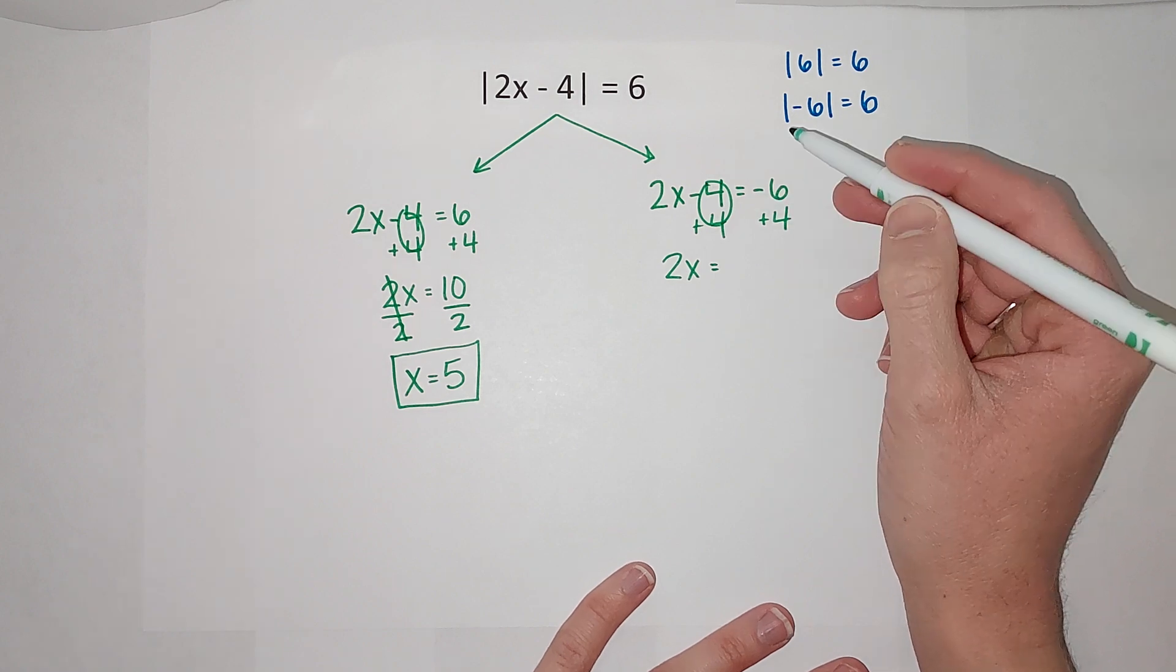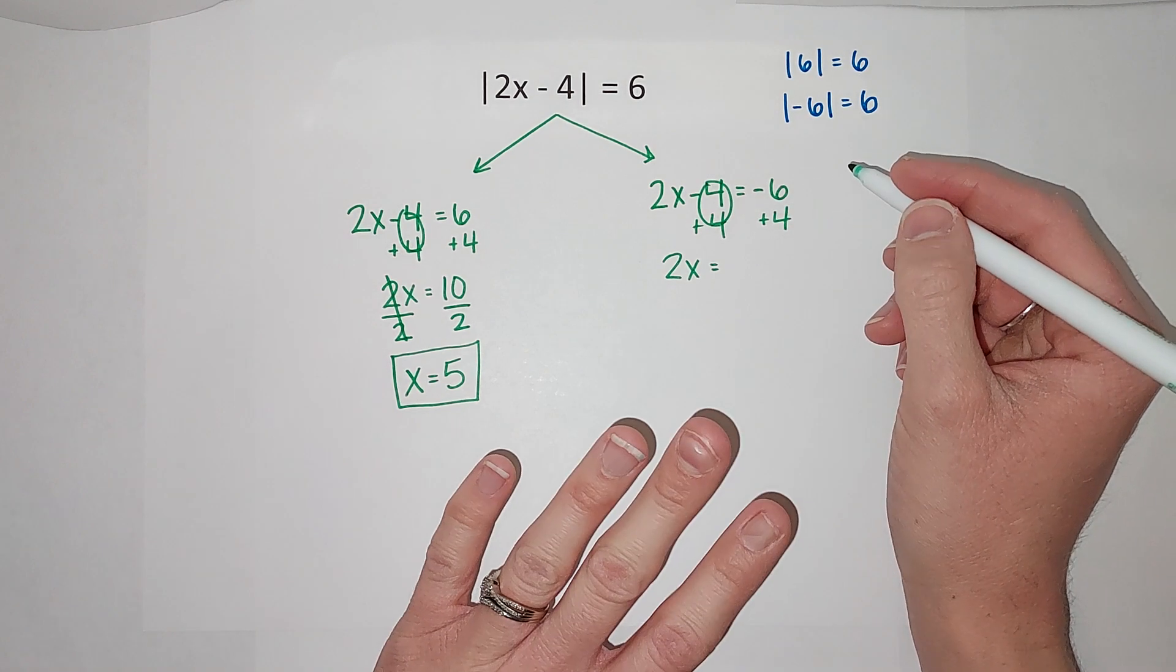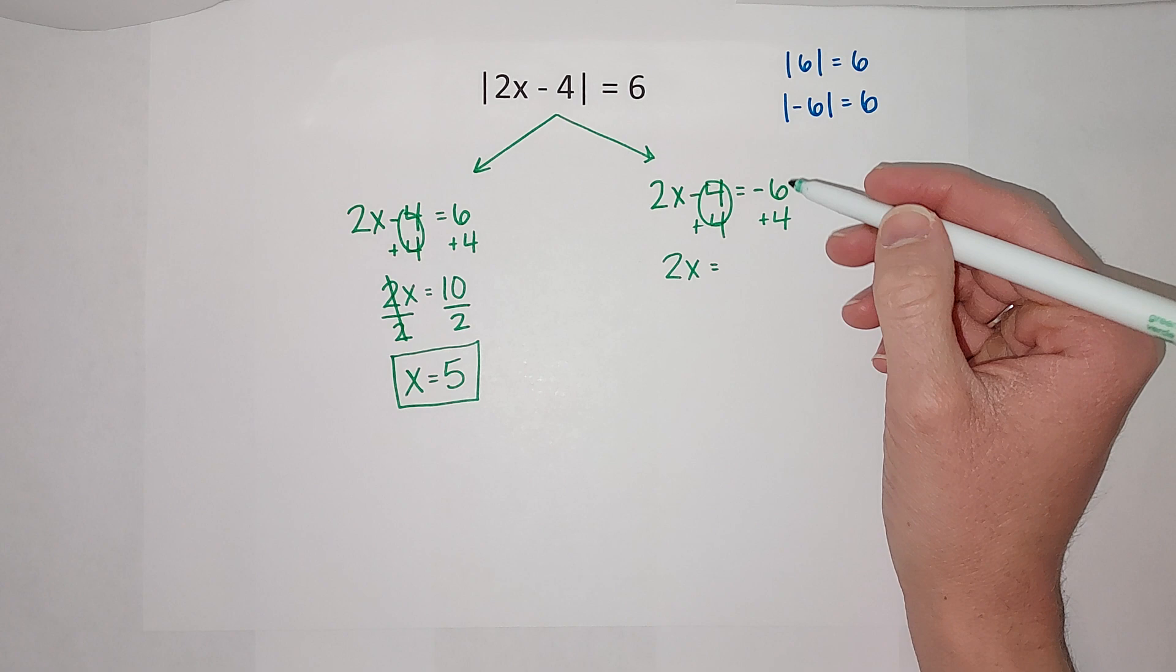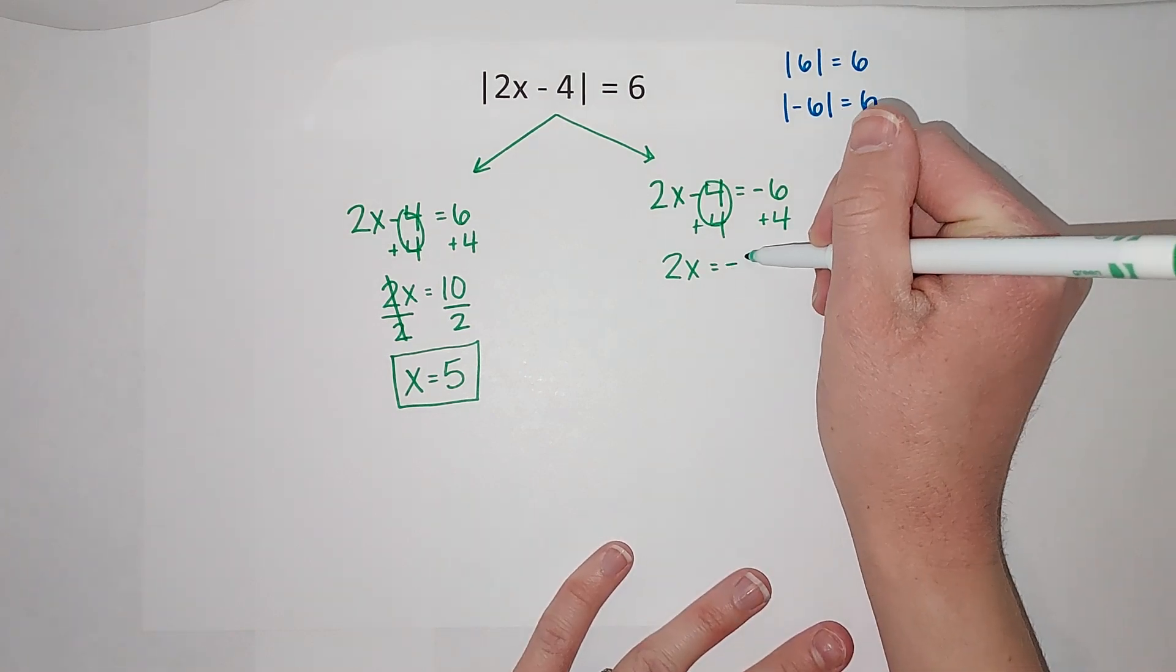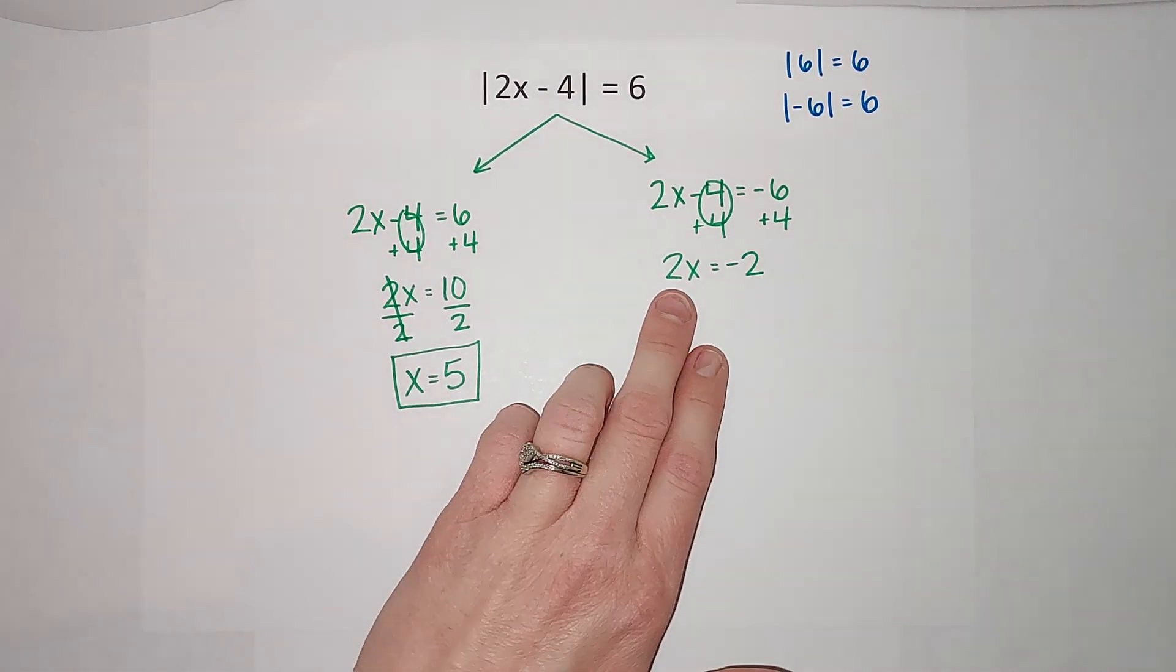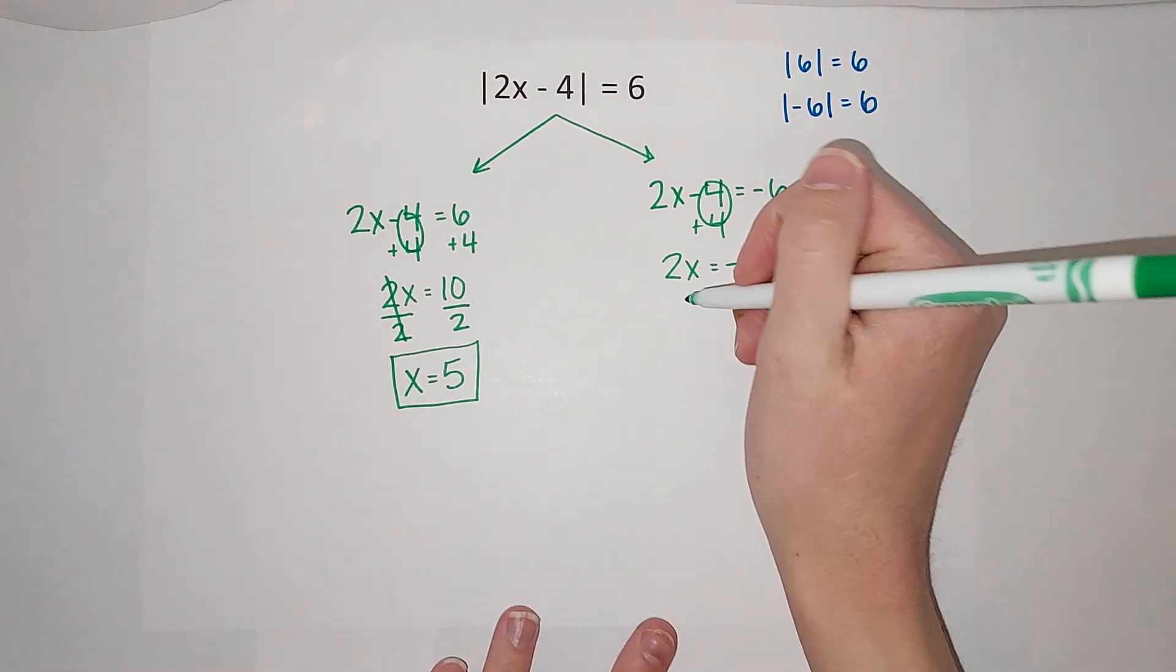Equals negative six plus four. This is like I owe you six dollars and I'm like I don't have it all but I can pay you four, and you're like thank you but you still owe me two dollars, right? Negative two. Now two is being multiplied by x so I'm going to divide.